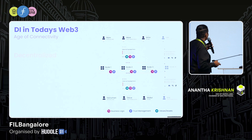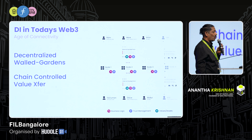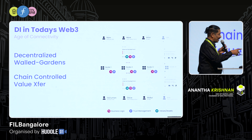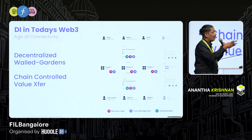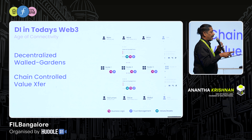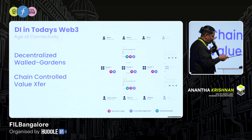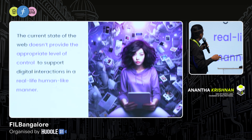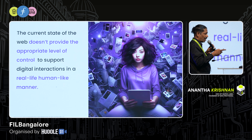What happens in Web3? App servers are replaced by app chains. You have many layers, many chains, and you need to interoperate between them. There is some semblance of value transfer, but they're not decentralized — they're walled gardens. You need connectivity, bridges, millions of bridges, zillions of app chains, all working together. The current state of the web does not provide the appropriate level of control to support real-life interactions.